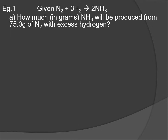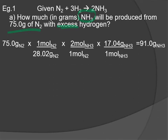Let's say we have nitrogen and hydrogen reacting to form ammonia — the Haber process. How many grams of ammonia will be produced if we started with 75 grams of nitrogen, with excess hydrogen? We use the molar mass of nitrogen to get to moles of nitrogen, use the 2-to-1 mole ratio from the equation to go from moles of nitrogen to moles of ammonia, then convert moles of ammonia to mass. Running it through gives 91.0 grams of ammonia — straight stoichiometry.